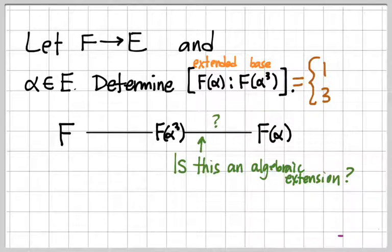How do we know that f adjoin alpha is algebraic over f adjoin alpha cubed, knowing nothing else about alpha?